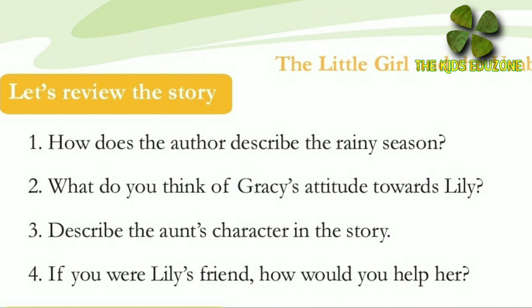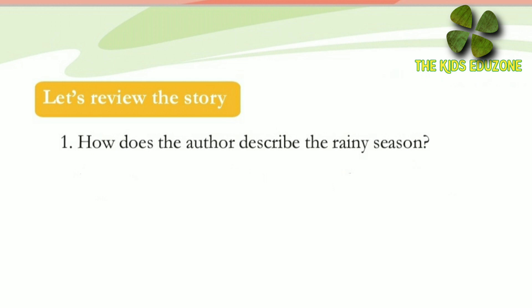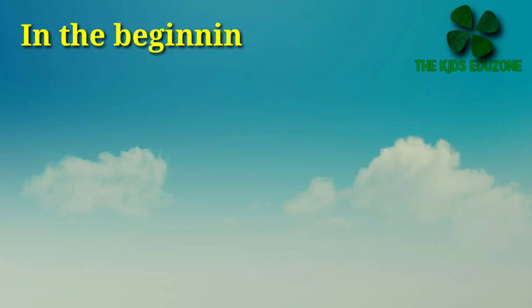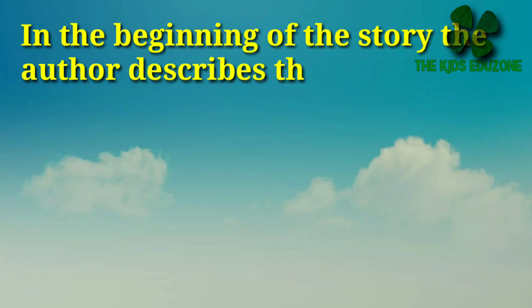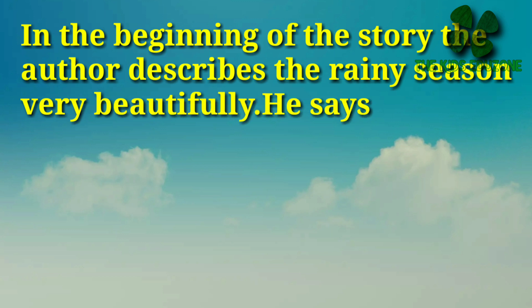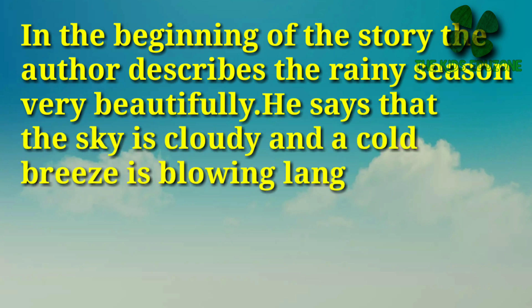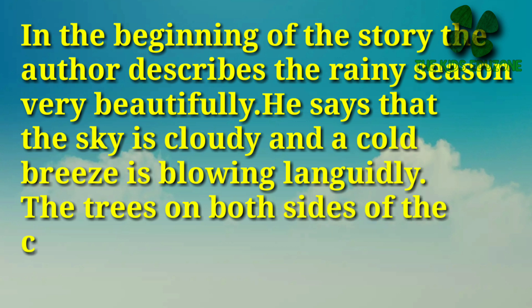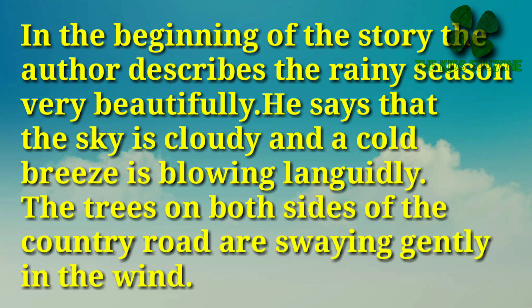There are four questions in the portion. Let's review the story. The first question: how does the author describe the rainy season? In the beginning of the story, the author describes the rainy season very beautifully. He says that the sky is cloudy and a cold breeze is blowing languidly. The trees on both sides of the country road are swaying gently in the wind.